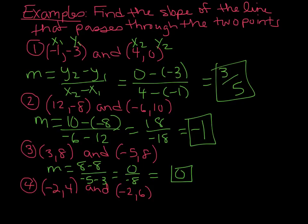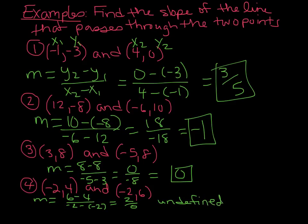For number 4, you'll find again there's something weird going on, but in a slightly different way. You end up getting 2 over 0. In math, one of our big rules is you cannot divide by 0, so that's going to be an undefined slope. If you were to draw out those points, you would get a vertical line.